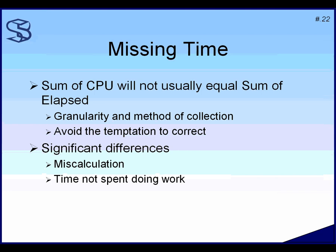Some Oracle code is not instrumented, so elapsed time that occurs there isn't tracked. Another common issue is servers with too few CPUs — you spend time sitting in the run queue, and Oracle doesn't track that time; it only knows when you're on or off the CPU. You can use timestamps to correct some of this drift, but a time difference of up to ten percent is not unusual.